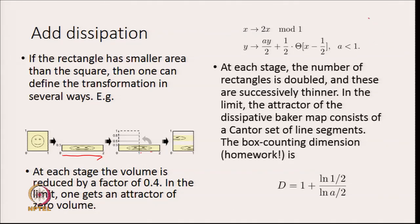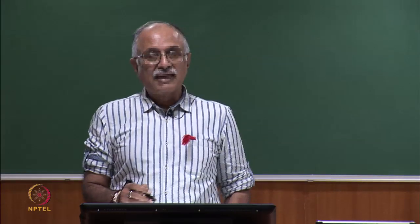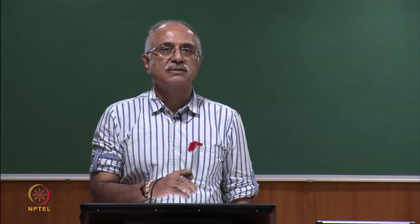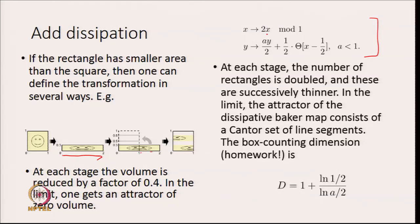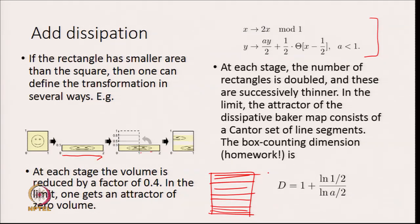At each stage you get 2 rectangles at stage 1, 4 at stage 2, double that at stage 3, and so on — each getting thinner because they are multiplied by the factor a to the power k. In the limit, the attractor of this dissipative Baker map is a set of lines: a Cantor set in one direction and a line in the other. In the next homework you will calculate the box counting dimension of this and show it equals a particular quantity.